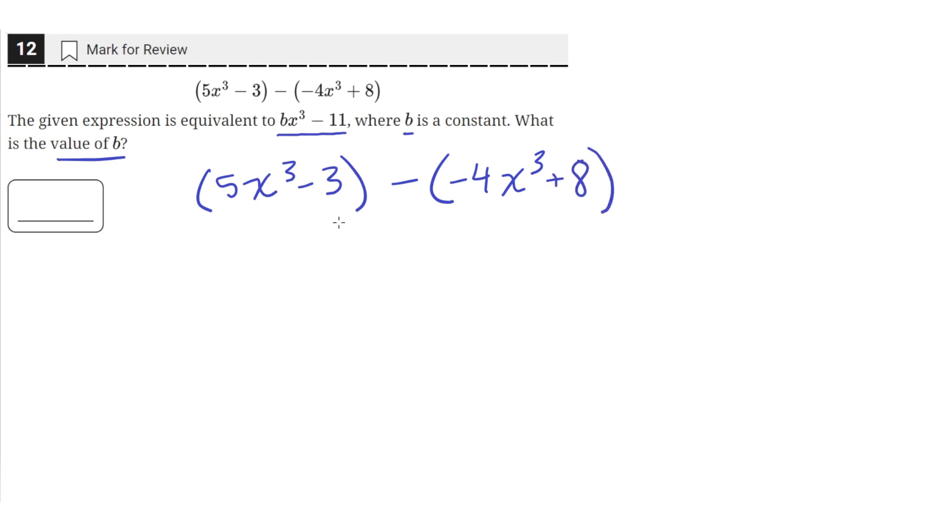And we need to simplify this so that it's in the form bx cubed minus 11, so we can match up terms and see which one is the value of b. So we can just take these terms out of the parentheses, so 5x cubed minus 3, and then distribute this negative sign into these two terms. So negative times a negative is positive, so positive 4x cubed and negative 8, since we distributed the negative to both.